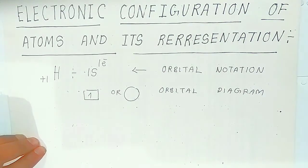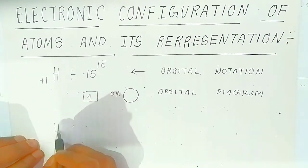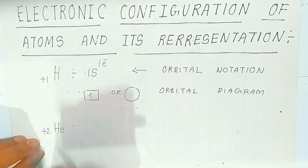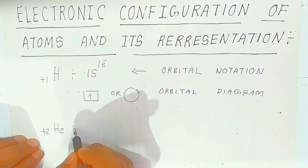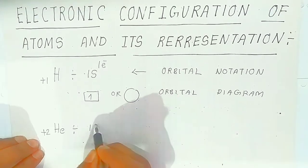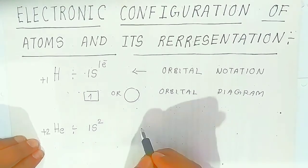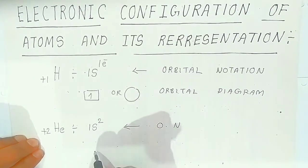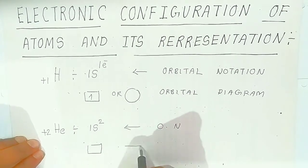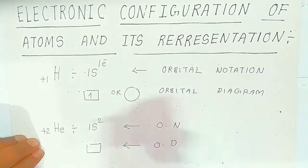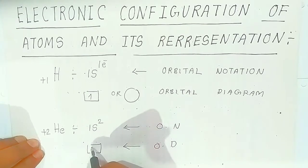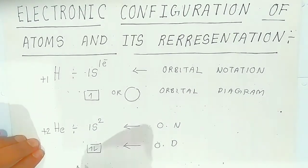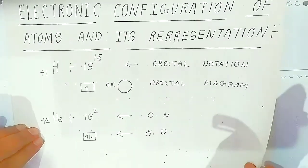Now for helium, the atomic number is plus two, meaning two protons. The electronic configuration is 1s2. In the orbital diagram, you have two electrons — one will be placed like this and the other will have opposite spin. This is the electronic configuration of helium, which is an inert gas.